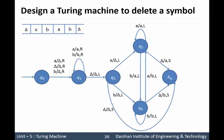Let us implement this logic. Our head pointer is pointing to B. According to our logic, first of all we have to replace this B by delta. So replace B by delta and move to the right direction. Now move to the right direction until you reach the right end of the string. A will be replaced by A, B will be replaced by B, and now we have delta, which means it is the right end of the string.